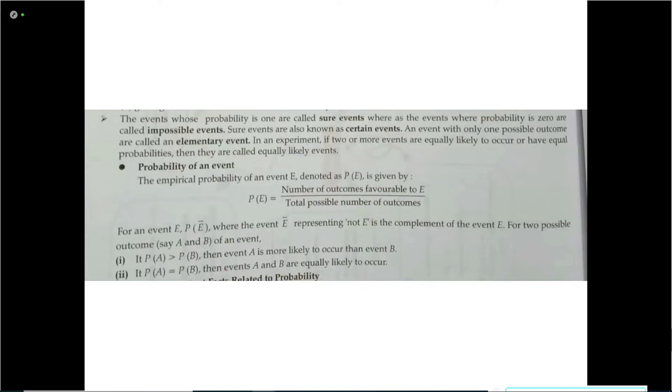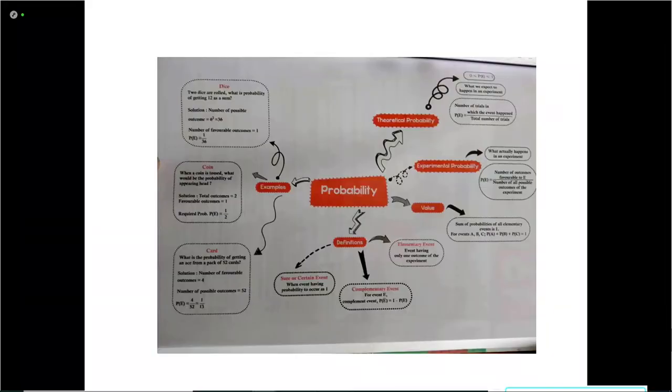The definition of probability will be: number of outcomes favorable to the event divided by the total possible number of outcomes. This is the notation P(E), where E refers to the event being considered. Another representation is P(Ē), where Ē represents 'not E' — meaning the event E not happening. P(Ē) = 1 − P(E). The complementary event, the value of sure events, and the fact that the sum of all probabilities is always 1 were also discussed. One more question can be asked on that fact.